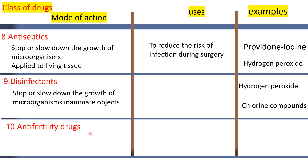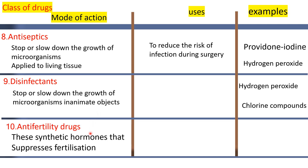Antifertility drugs are synthetic hormones that prevent fertilization. These are used as birth control tablets. An example is ethynylestradiol combined with a progestin.